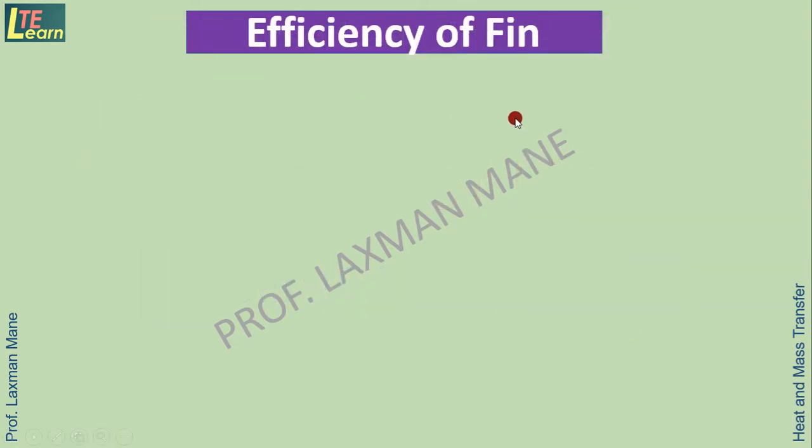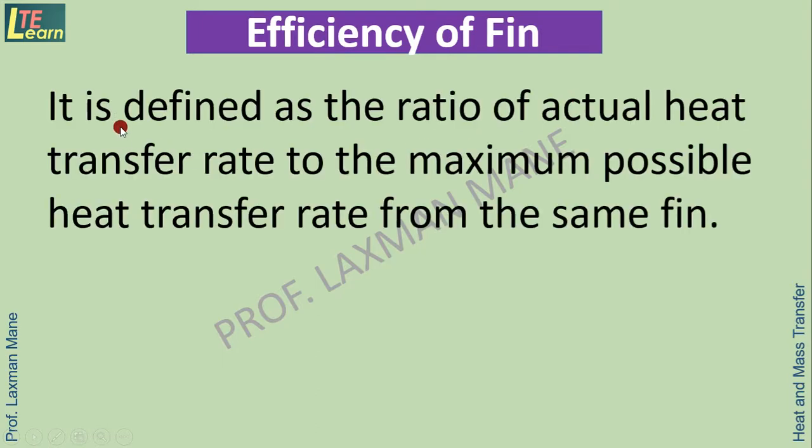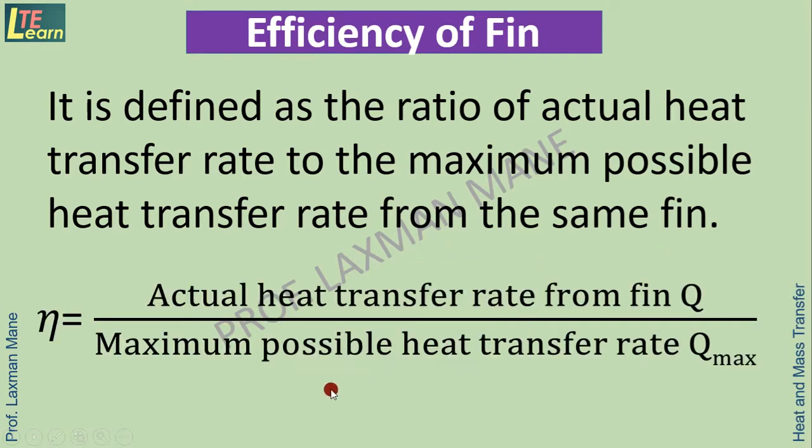Let us see about efficiency of fin. It is defined as the ratio of actual heat transfer rate to the maximum possible heat transfer rate from the same fin. Mathematically it is written as η equals Q, the actual heat transfer rate from fin, divided by Q_max, the maximum possible heat transfer rate.